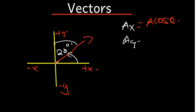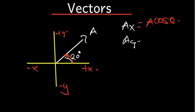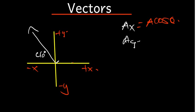Now let's have a different example. Let's say we have a vector somewhere in the second quadrant, and we have been given that the angle near the negative x-axis is 40 degrees. To resolve this vector into x and y components, we need the angle from positive x until it touches that vector. We know from positive x to negative x is 180, so it's going to be 180 minus 40, which gives us 140. The angle we are going to use is 140 degrees.